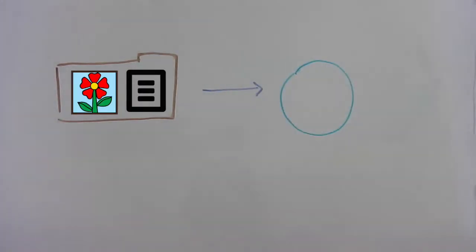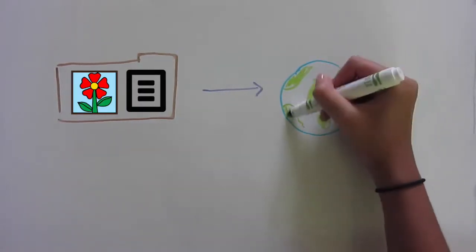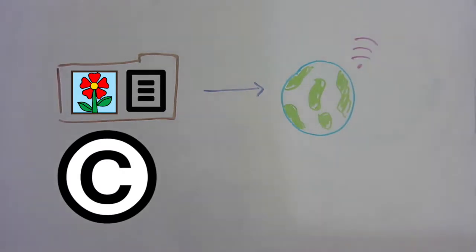When you post something online, a picture, an article, or your own creativity, you automatically own an all rights reserved copyright to it.